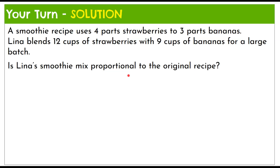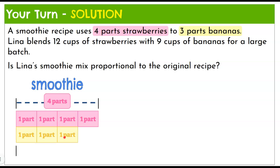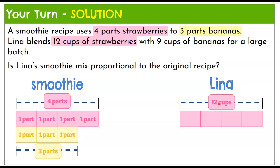Welcome back. Let's go through the solution together. We start with the original smoothie recipe — four parts strawberries, so we have four boxes each representing one part, for a total of four parts strawberries. The second part of the recipe is three parts bananas, so we add three boxes representing our three parts bananas. Now for Lena: she starts with 12 cups of strawberries, divided among four parts. So 12 divided by 4 equals 3 — each part is three cups. Three, six, nine, twelve.